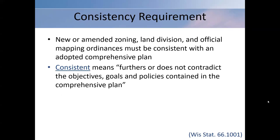One last piece included in the comprehensive planning law is a consistency requirement. There's not actually a requirement that every community have a comprehensive plan — it's kind of a backdoor requirement. So if you have zoning, land division, or official mapping tools, when you update those tools, they need to be consistent with the comprehensive plan. Consistent means it furthers or does not contradict the objectives, goals, and policies contained in the plan. The takeaway is that the plan needs to be supportive of the ordinance and vice versa. The plan is that future visionary guiding document, whereas the regulations govern what happens on the landscape today.